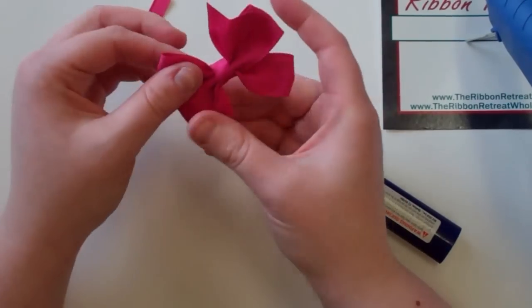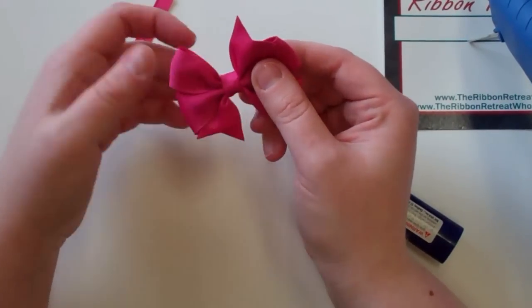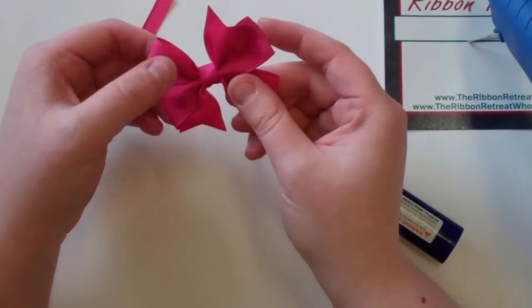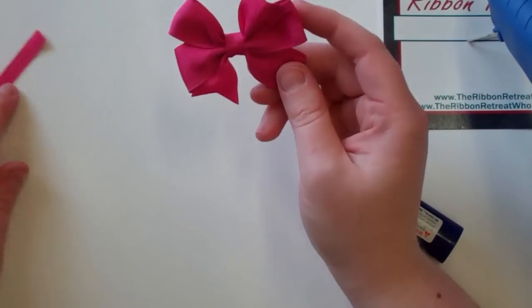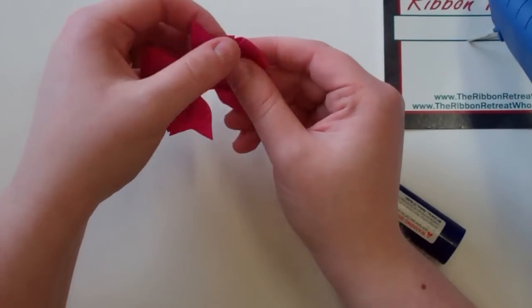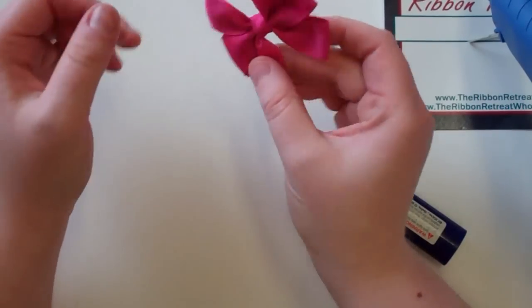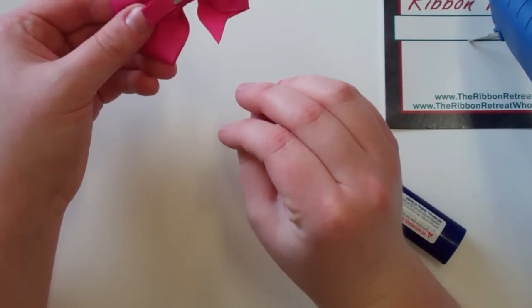And you can take your bow and fluff your loops, shape the bow how you want it. And there is your pinwheel hair bow with a wrapped center and an alligator clip on the back.